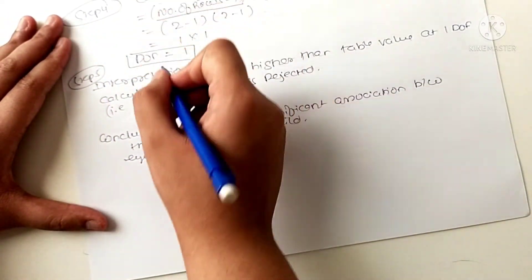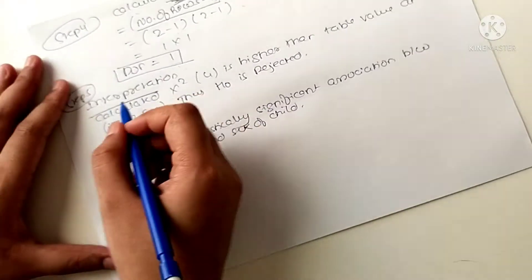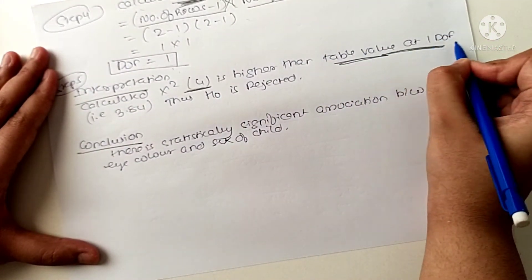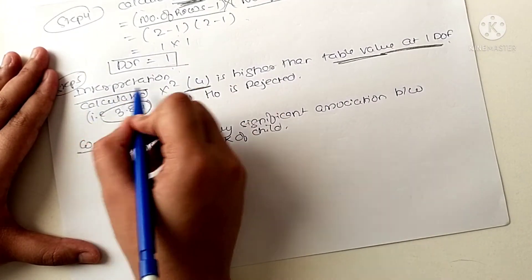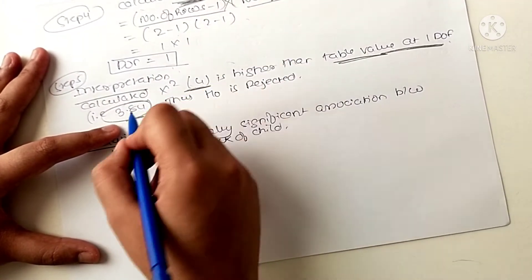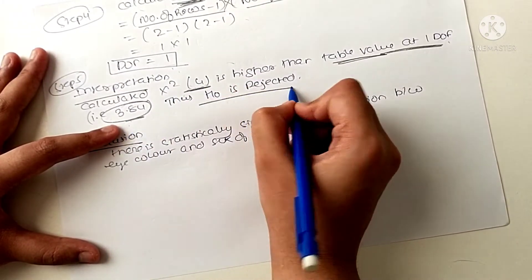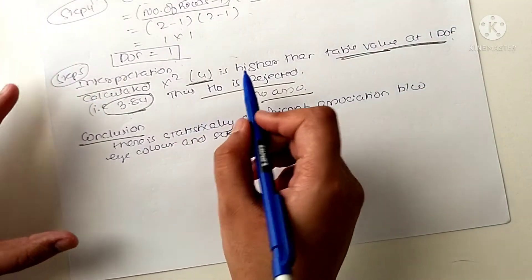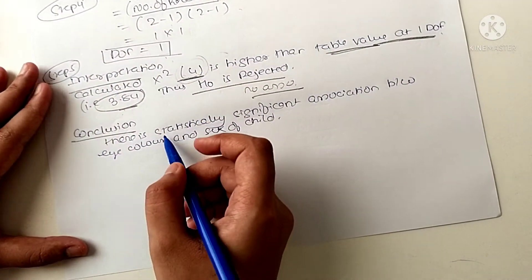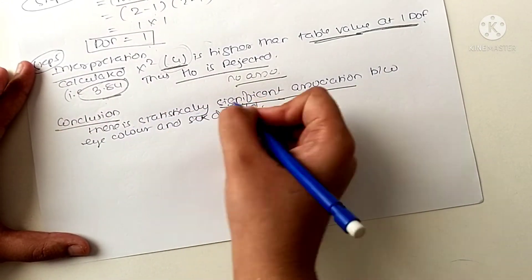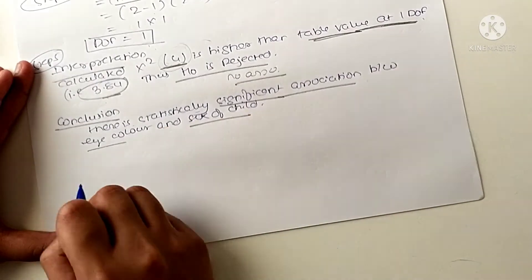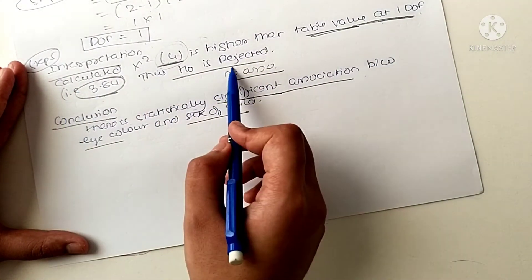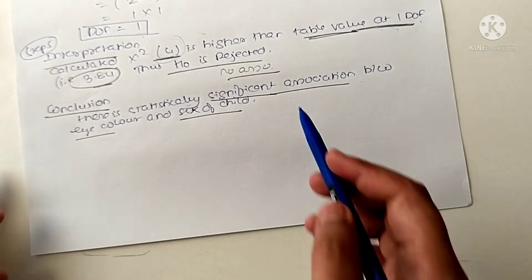Step five is interpretation and conclusion. The calculated chi-square value of 4 is higher than the table value at one degree of freedom. Since the calculated value is higher, the null hypothesis is rejected. The conclusion is that there is a statistically significant association present between eye color and the sex of the child.